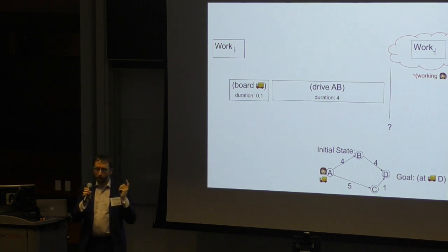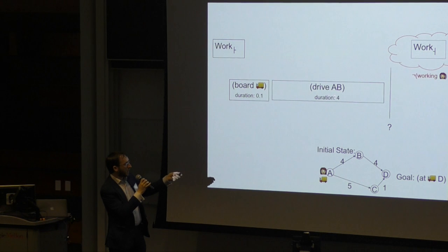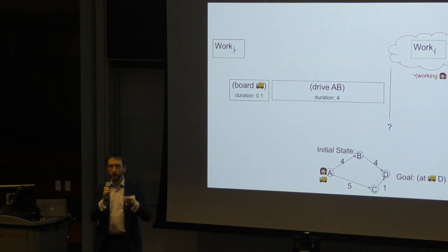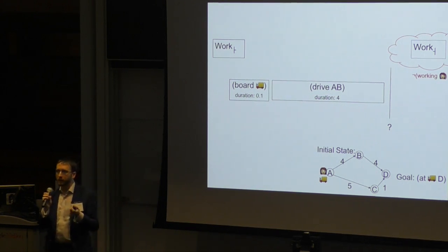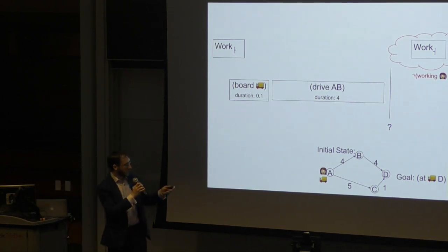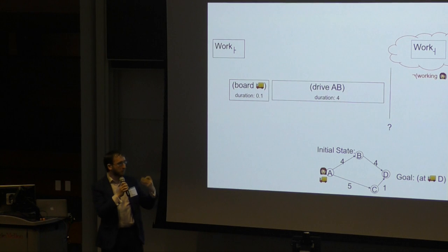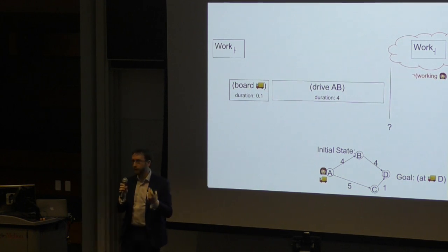The problem we have though if we're doing search and we have this incomplete plan, so far we have boarded the truck and driven from A to B. This work action hasn't ended yet. This incomplete plan doesn't reach the goals but it is consistent. We haven't actually violated any constraints here, and if we use a relaxation heuristic it will happily ignore this negative effect here to say in the future we're going to delete this fact working, and it will carry on searching and it will deem this problem to be solvable.